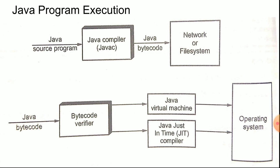The Java bytecode is given as input to the network or file system. The Java bytecode verifier — inside the Java Virtual Machine — checks each and every line of the code, and if there is any error it will be notified. We also have the Just-In-Time compiler, which we'll discuss later. If the syntax is correct, it will be sent to the operating system for processing.